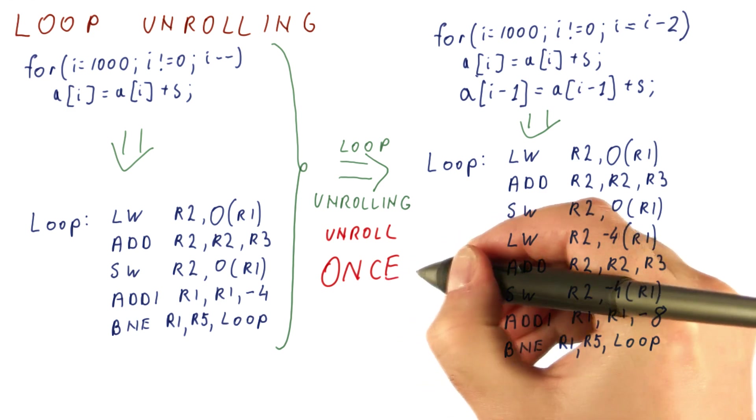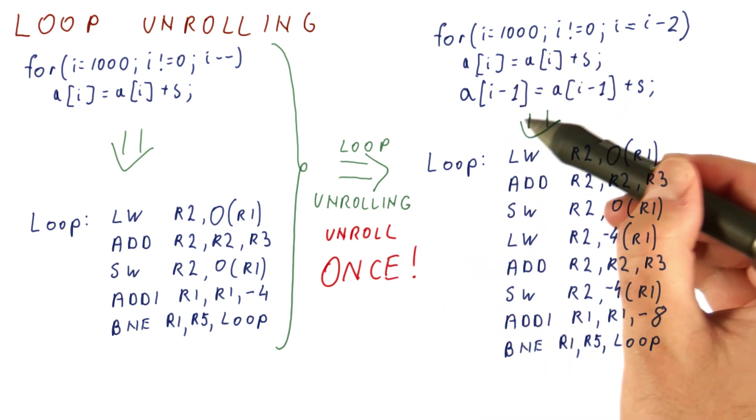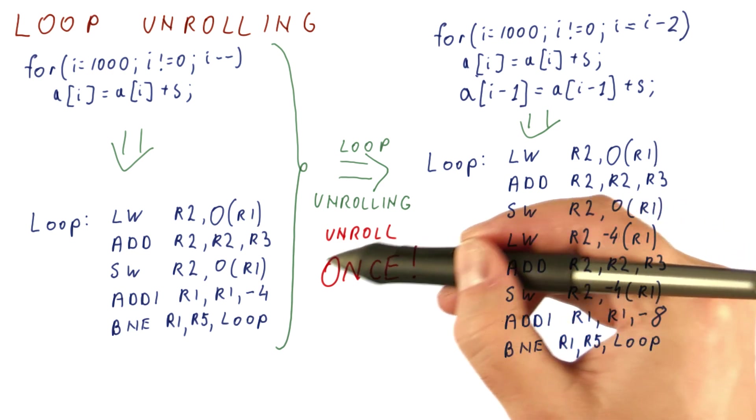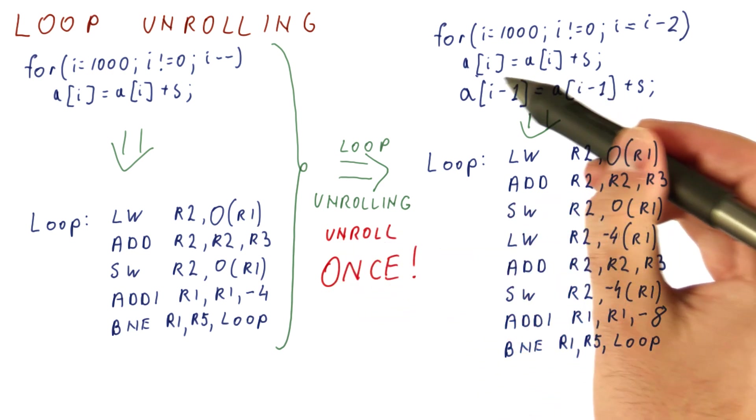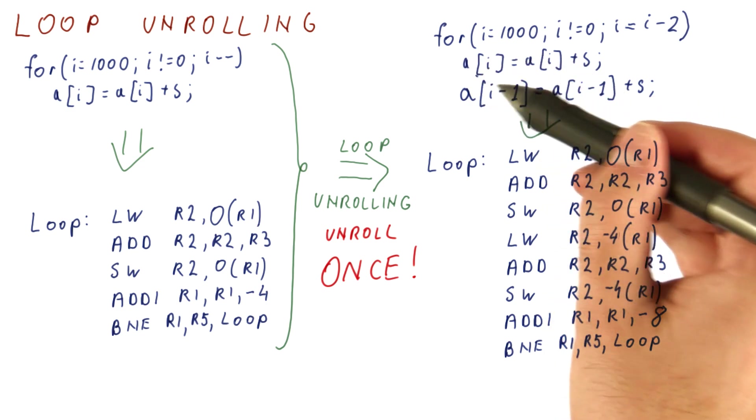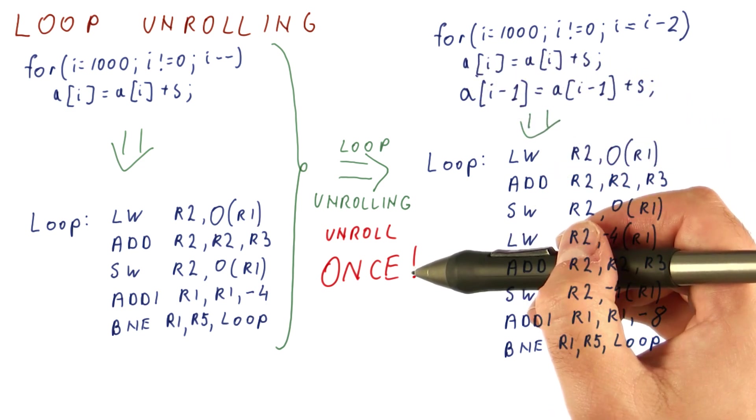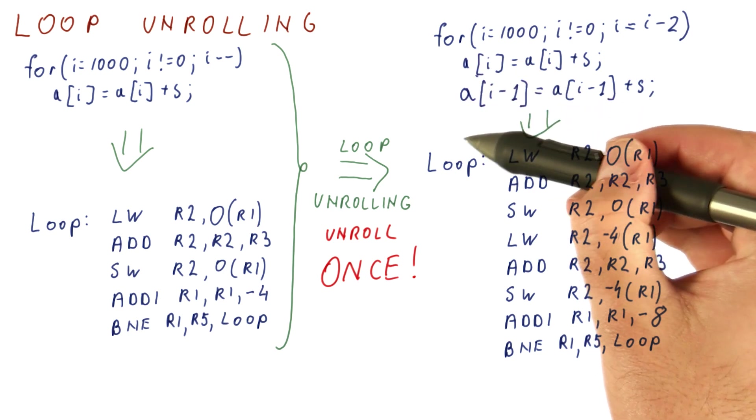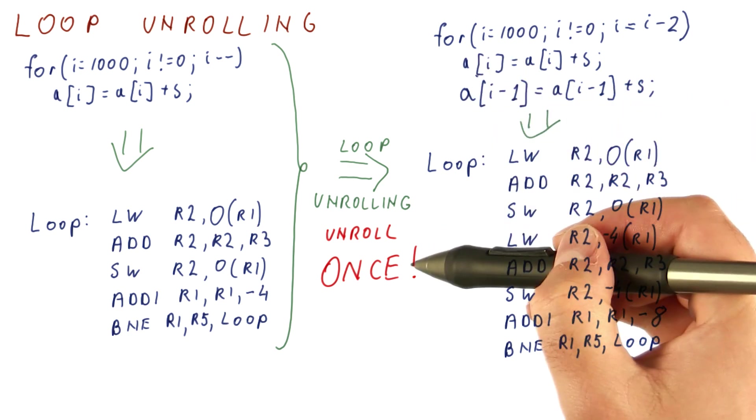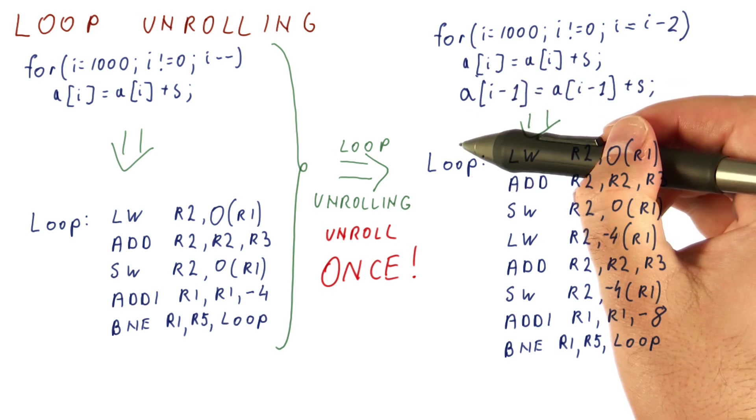This is what it means to unroll once. So keep in mind that when we are doing two iterations at a time, we have unrolled the loop once because we have added one iteration of the original loop in addition to what the iteration normally would be doing. Unrolling twice would mean that we are doing three iterations at a time. Unrolling three times means that we are doing four times the work and so on.